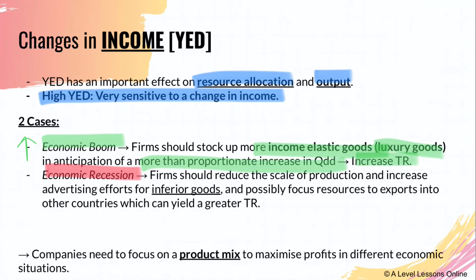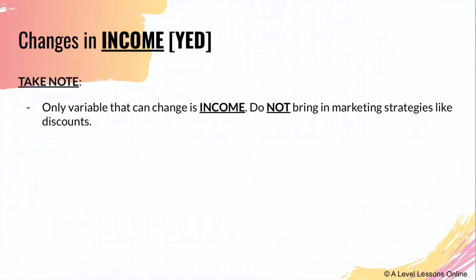During a recession, firms should reduce the scale of production and increase advertising efforts for inferior goods (negative YED), because when income falls, quantity demanded for inferior goods rises. Firms can also focus resources on exports to other countries to yield greater total revenue. The key evaluation is that companies need a product mix of inferior and luxury goods to weather both economic recessions and booms. Note: the only variable changing here is income — do not bring in marketing strategies or discounts, as those imply a change in price.